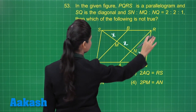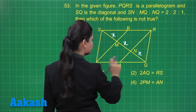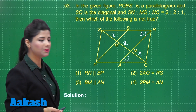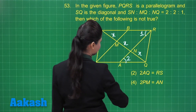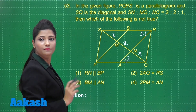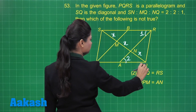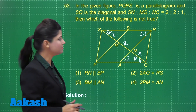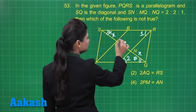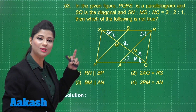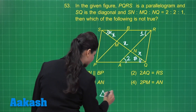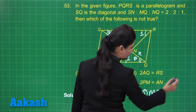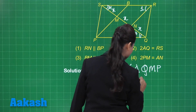Considering parallelogram PQRS, we know SR is parallel to PQ. If we consider angle 1 and angle 2, these are alternate interior angles, so they are definitely equal. Now consider triangle SNR and triangle QMP. SR is equal to PQ. Angles alpha and beta are alternate interior angles, so alpha equals beta. Also SN equals 2x and QM equals 2x. So we get side-angle-side congruency, meaning triangle SNR is congruent to triangle QMP by the SAS congruence criterion.